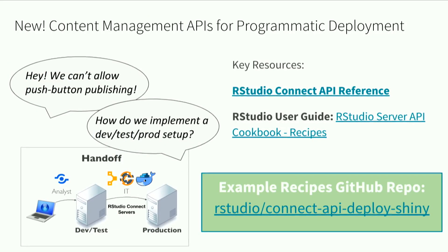This project is about the content management APIs for programmatic deployment — it's kind of a two-for-one in this talk because I was very excited about this feature coming into RStudio Connect 1.7. If you are working with your IT department and you've ever heard these questions — 'we can't allow push-button publishing' or 'how do we implement a dev-test-prod setup' — I believe our new stuff around programmatic deployment will be really helpful. The RStudio user guide has just been updated with a cookbook for various server API recipes, and there's also a GitHub repo with scripts showing examples of programmatic deployment.